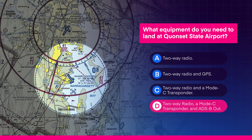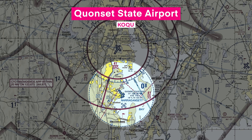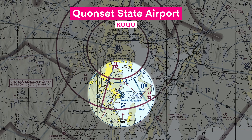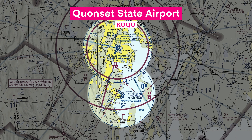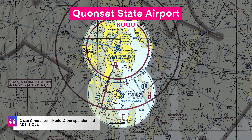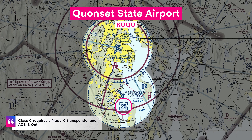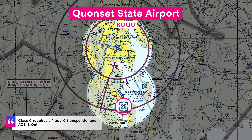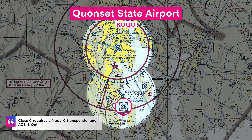Even though the Delta only requires a radio, you'd be flying under the Charlie, which requires a Mode C transponder and ADS-B out.